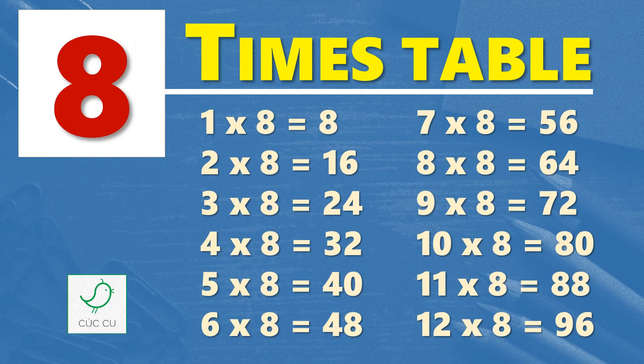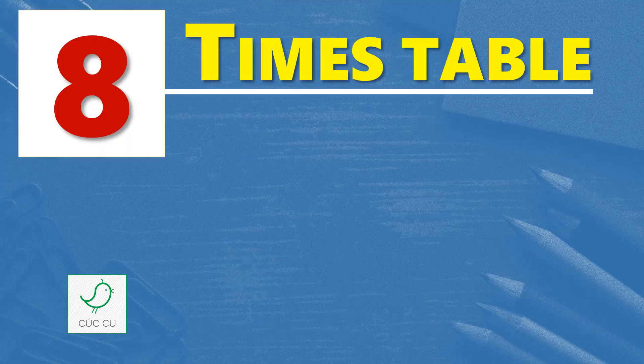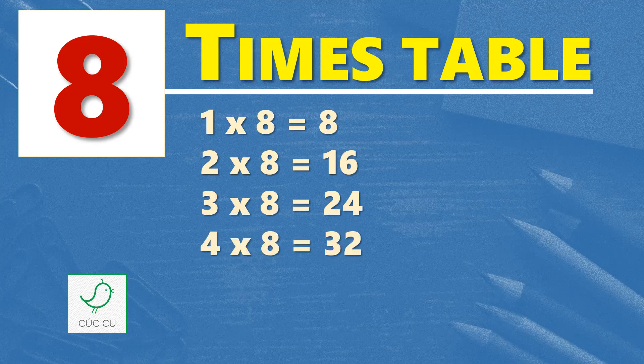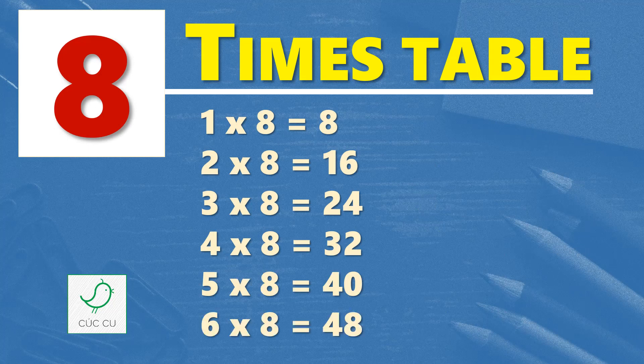Multiplication table of 8. 8 times table. 1 times 8 is 8, 2 times 8 is 16, 3 times 8 is 24, 4 times 8 is 32, 5 times 8 is 40, 6 times 8 is 48.